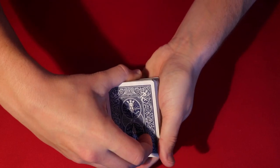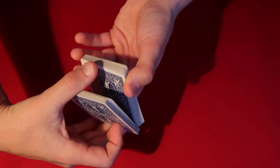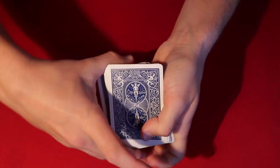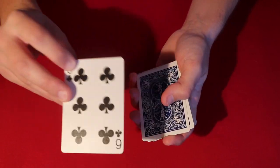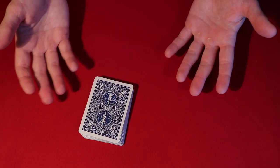And then move these cards to the top. So now I have the spectator selection on top and that random card is now on the bottom. And then from here the trick is pretty much set up.